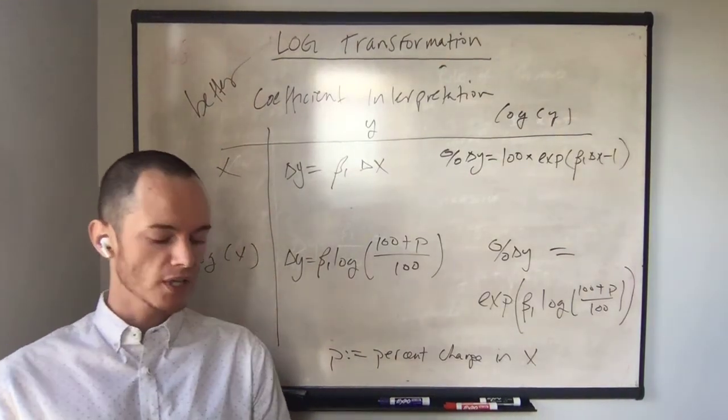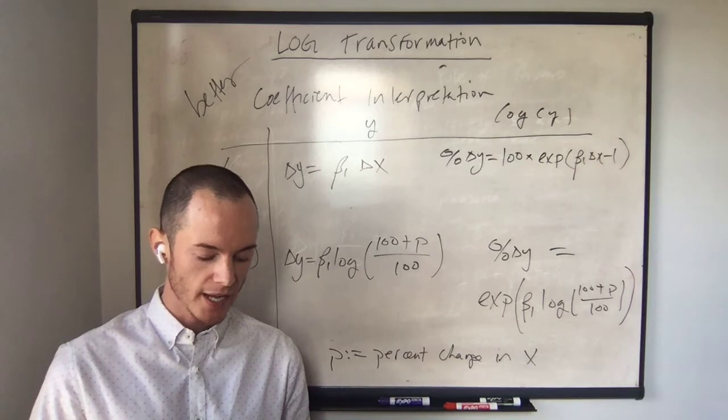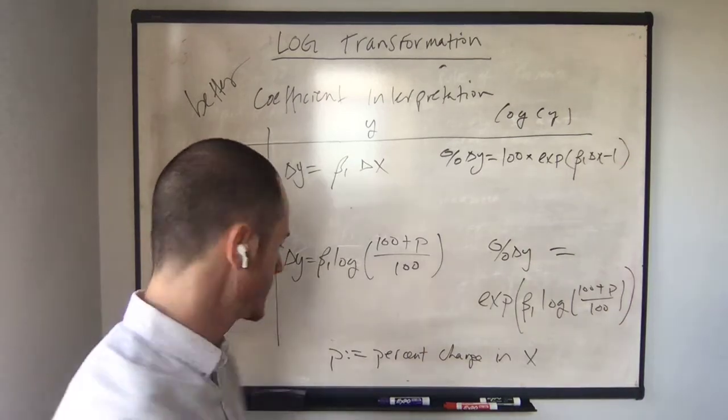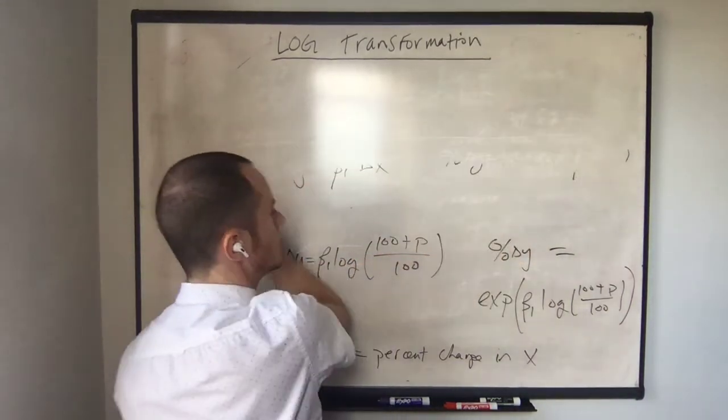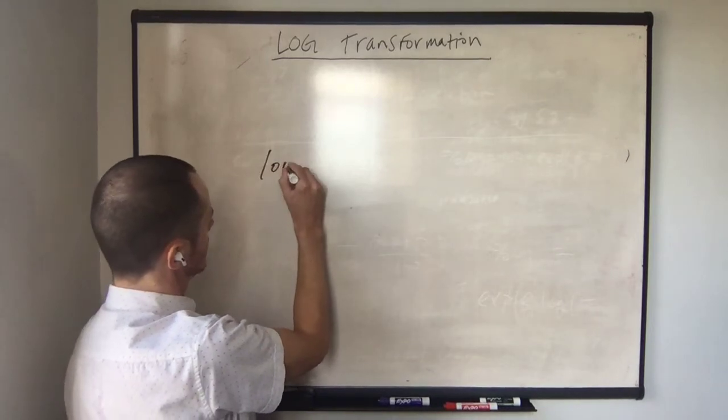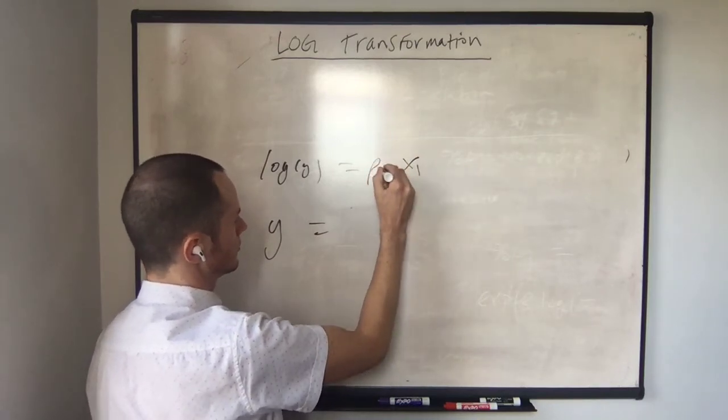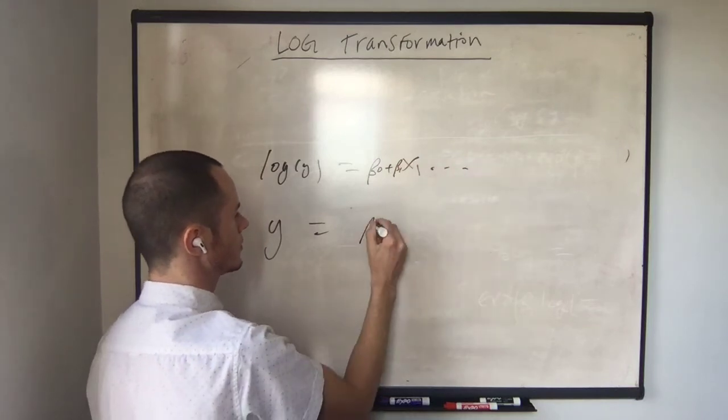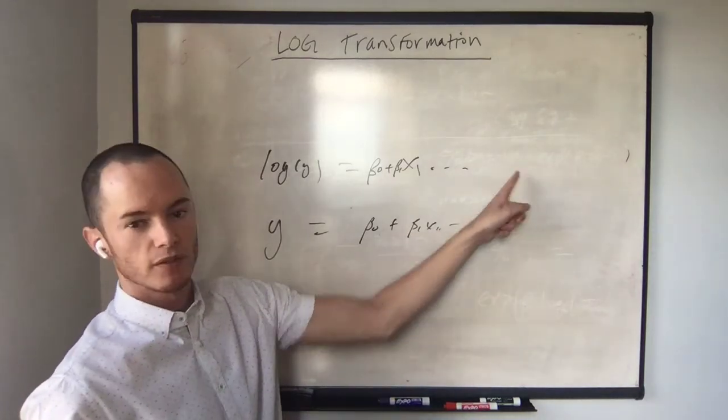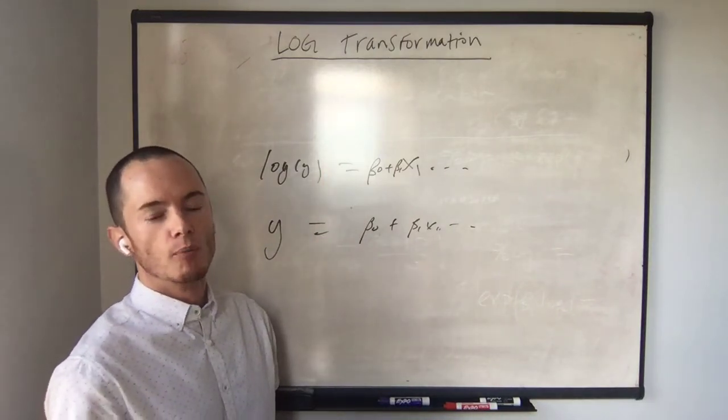Alright, so some additional notes on using logs. We can't compare the r squared between a model that has a log transformed dependent variable and a dependent variable in its original form. So that's important to keep in mind if you're trying to think about model selection. If you have log of y and y equals beta naught plus beta 1 x1, and so on and so forth, you cannot compare the r squared from these two regressions because you're explaining variation in a different variable. More on that in a later video.